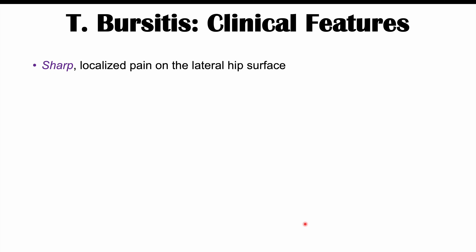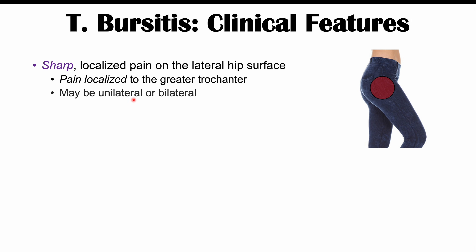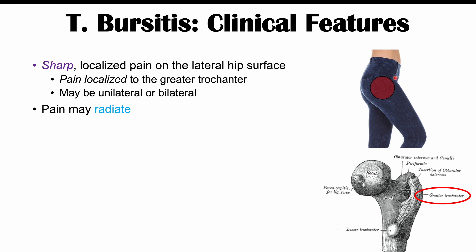The hallmark finding in this condition is a sharp, localized pain on the lateral hip surface, occurring over or at the greater trochanter. This bony prominence is where the pain is localized. The condition can be unilateral or bilateral, though unilateral is more common. The pain may radiate — it can spread down the lateral thigh on the ipsilateral side from the focal point of pain at the greater trochanter.